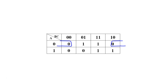We see two corner cells that are adjacent to each other. Both cells have A equal to zero, B changes, and they both have C equal to zero. So the Boolean expression for that blue group is A or C.